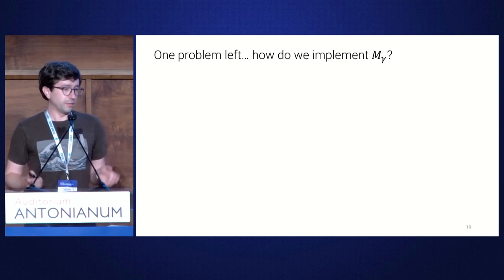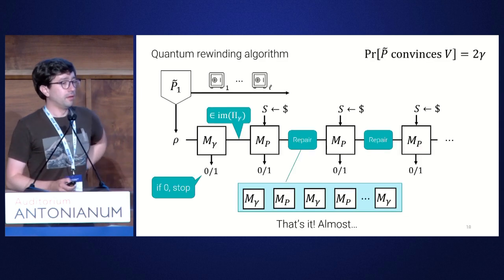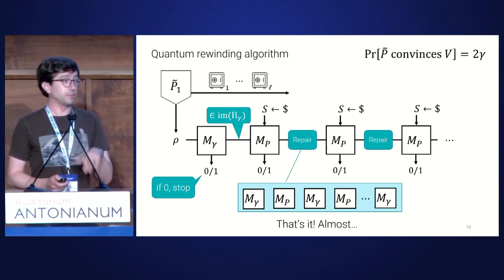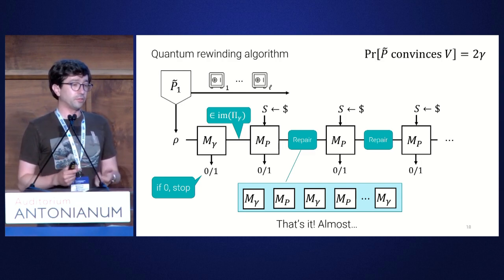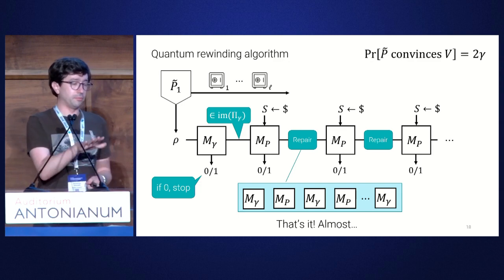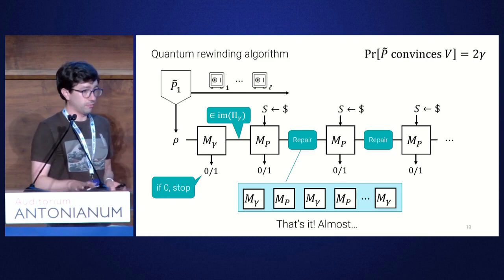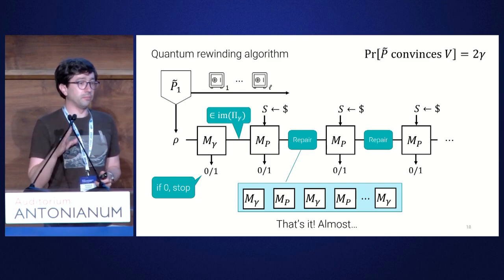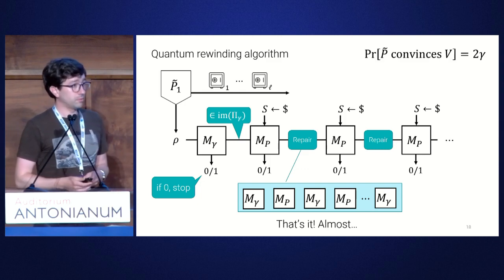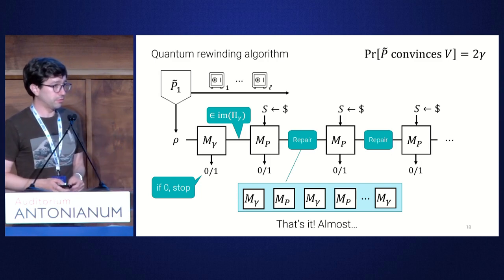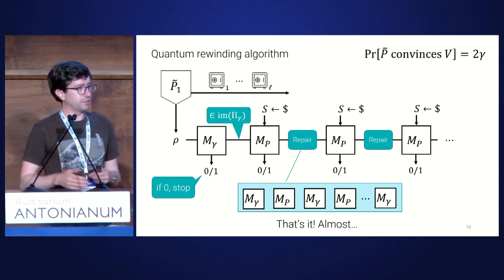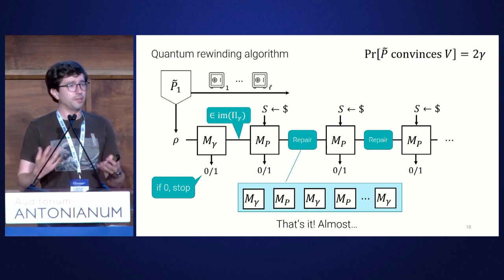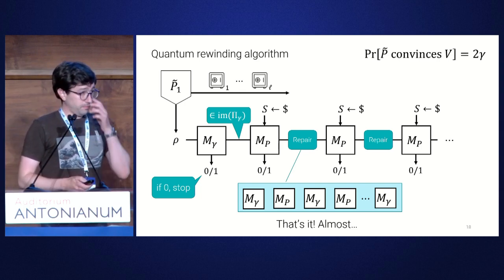There's a subtlety: M_gamma-tilde uses an ancilla, and the output is only meaningful when the ancilla is in the right state. You can deal with this via a clever use of Jordan's lemma. A question from the audience: what is gamma? It depends on the protocol — in the cryptographic setting it's often some arbitrarily small inverse polynomial, but it also works if gamma is a constant. The runtime will depend on gamma.